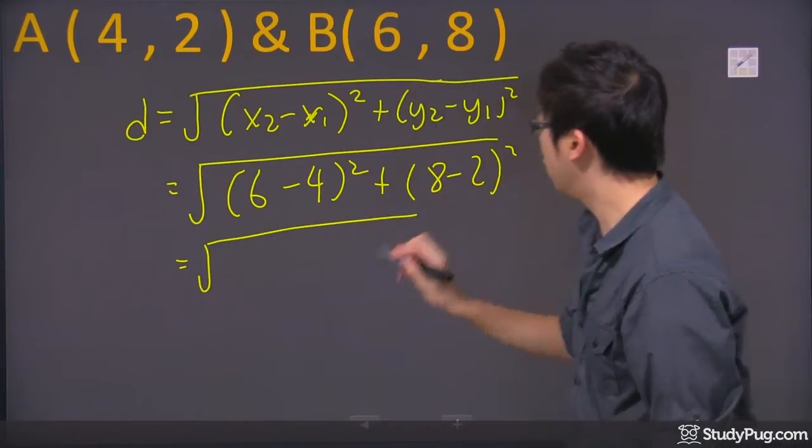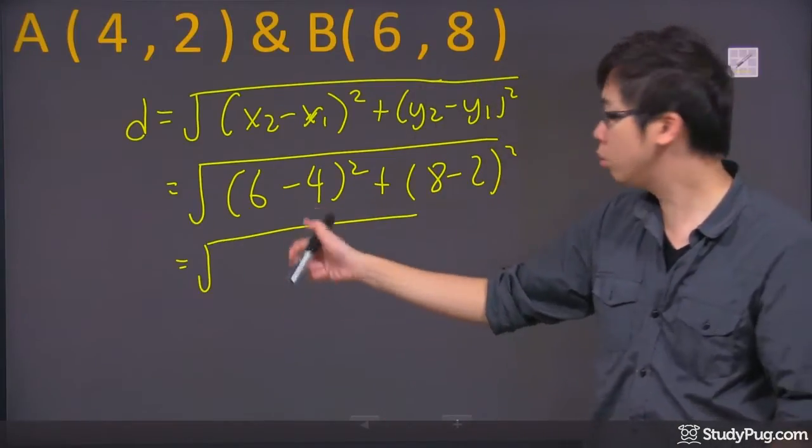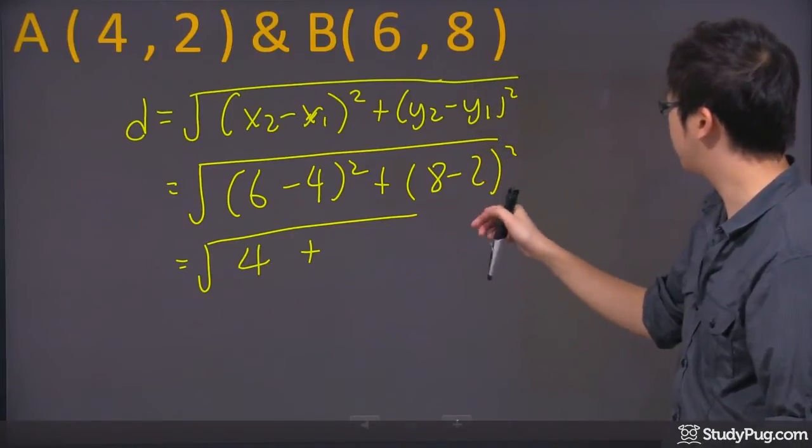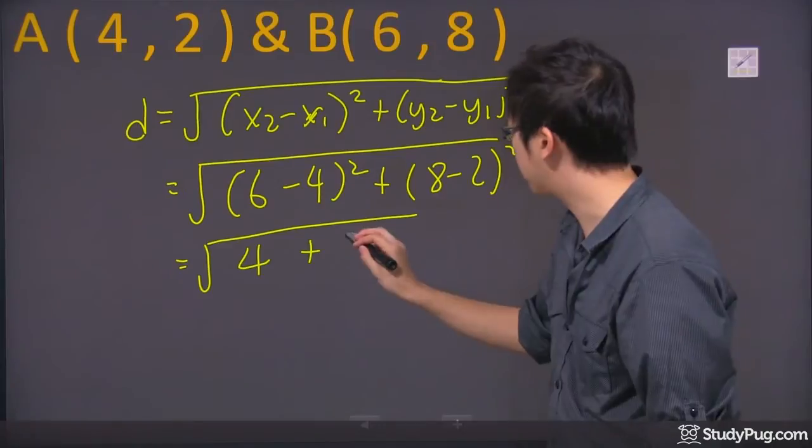Working on the math, we have 6 minus 4, which is 2. 2 squared is 4, plus 8 minus 2 is 6. 6 squared is 36.